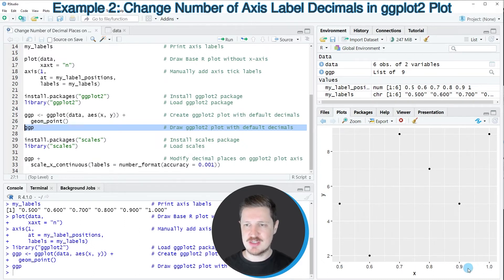And then you can see that our data points are shown in a scatter plot in this typical ggplot2 layout. And you can also see that the decimal places have been set to the default specification of the ggplot2 package.